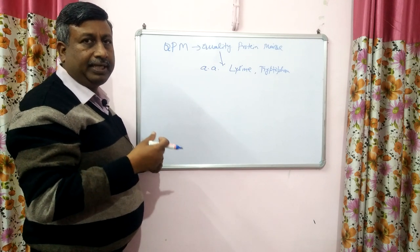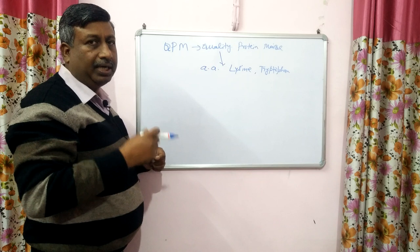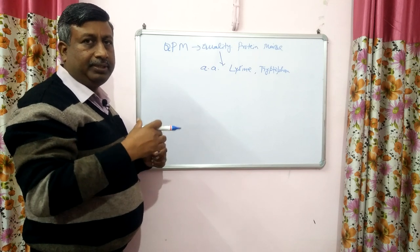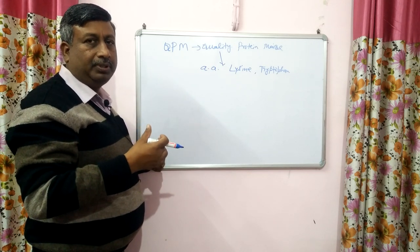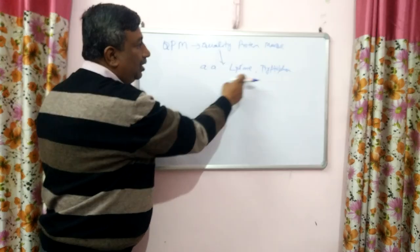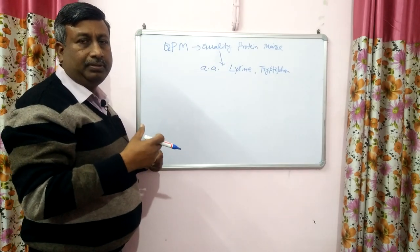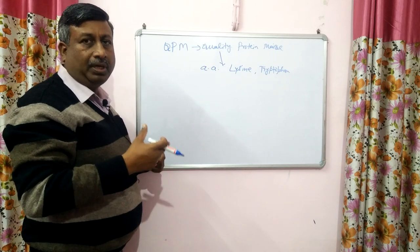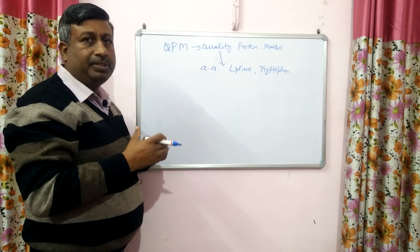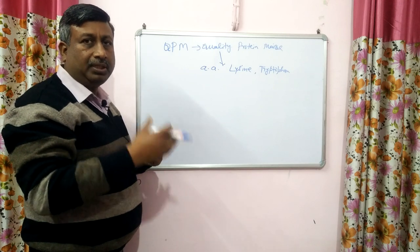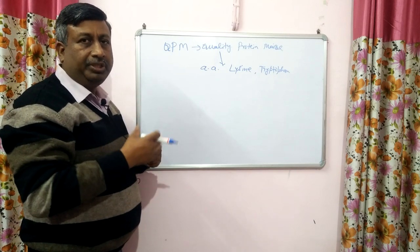Sulphur-containing amino acids like methionine and cysteine are high in cereals. The opposite occurs in pulse and legume crops — lysine and tryptophan are high, while methionine and cysteine are low. Therefore, cereals and pulses together in the diet can provide all amino acids in normal quantity.